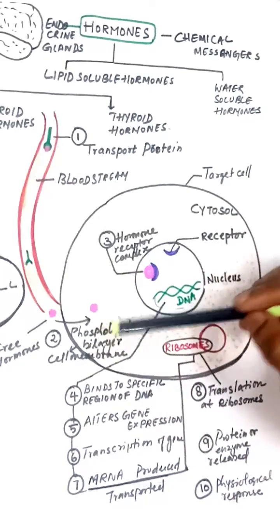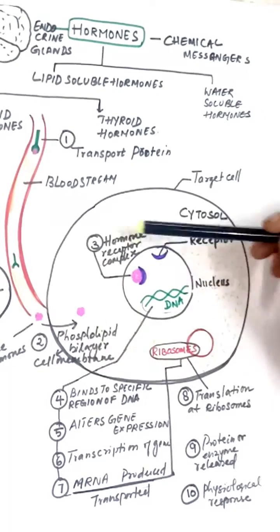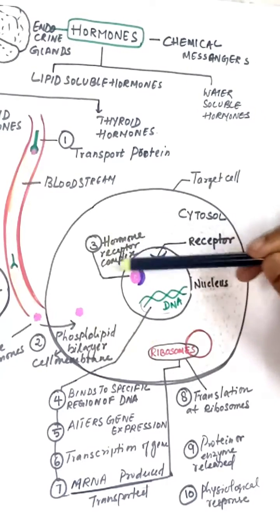The third step: from the cytoplasm it enters the nucleus where the receptors are present. It binds with the receptor and forms a hormone receptor complex.